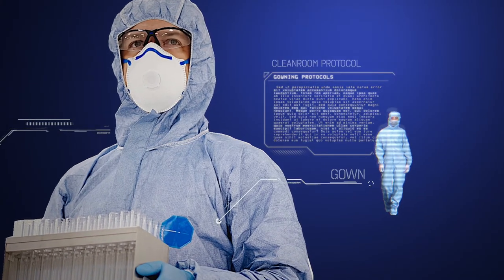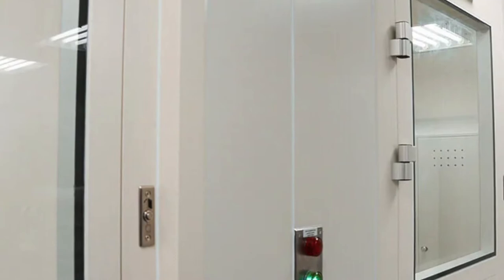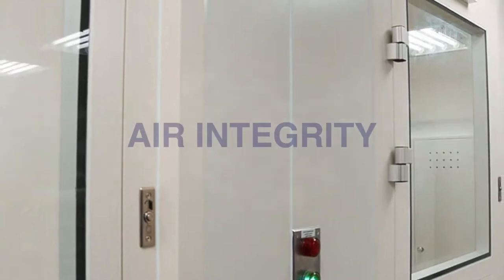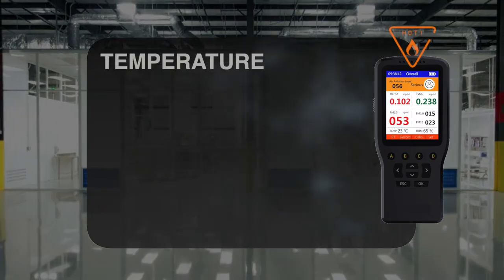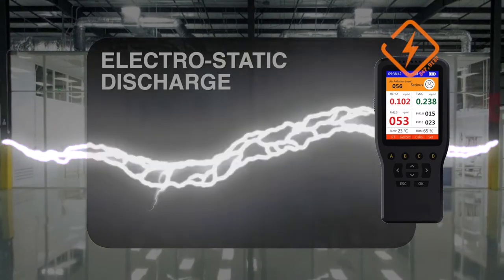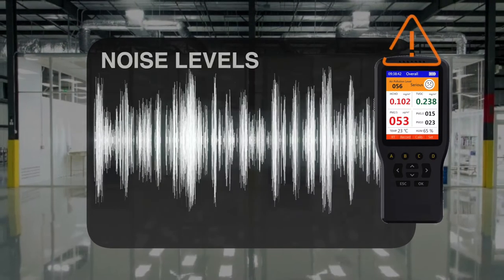Beyond this, workers should wear special gowns and always interlock the clean room doors to maintain air integrity. Other variables include observing the temperature, humidity, electrostatic discharge, and the noise levels of your clean room.